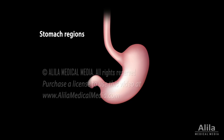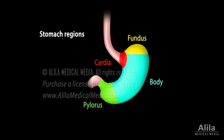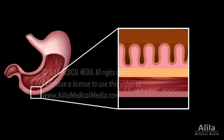The stomach has four regions: the cardia at the connection to the esophagus, the fundus above and to the left of the cardia, the main body, and the pylorus above the pyloric sphincter. Different regions differ in gastric secretions.